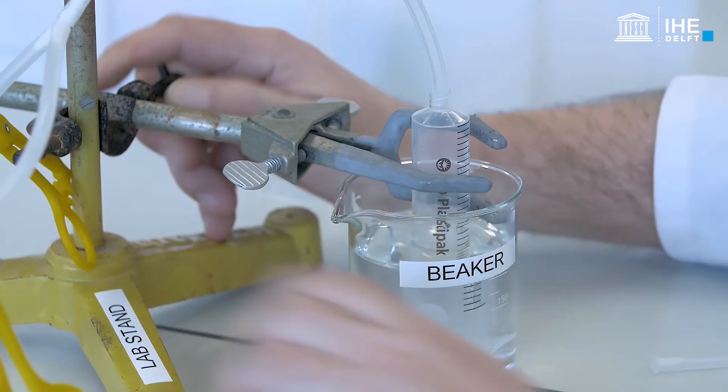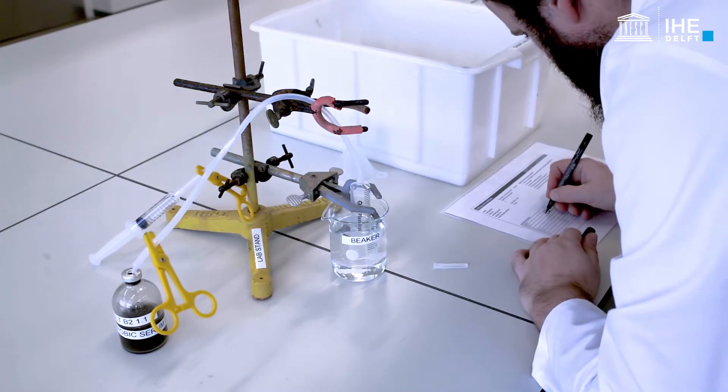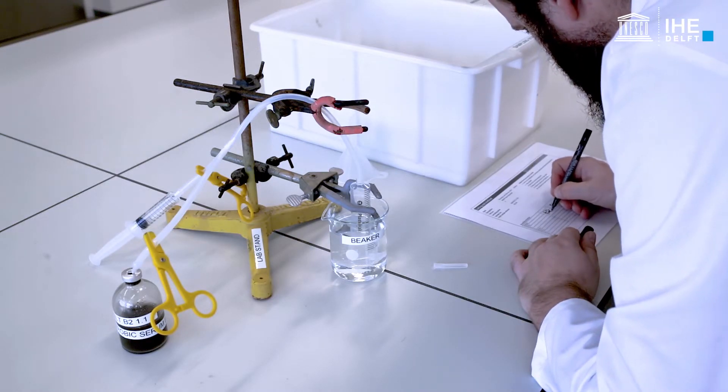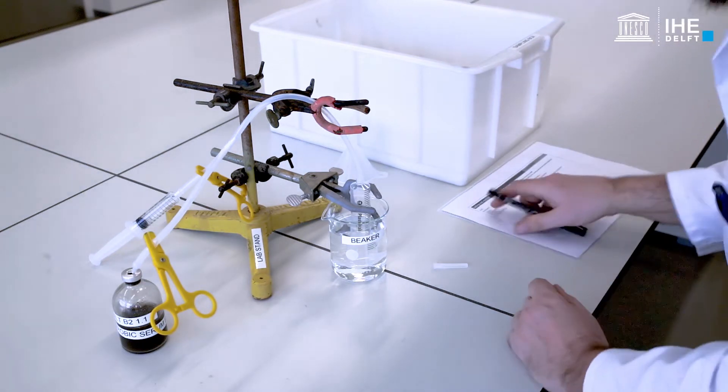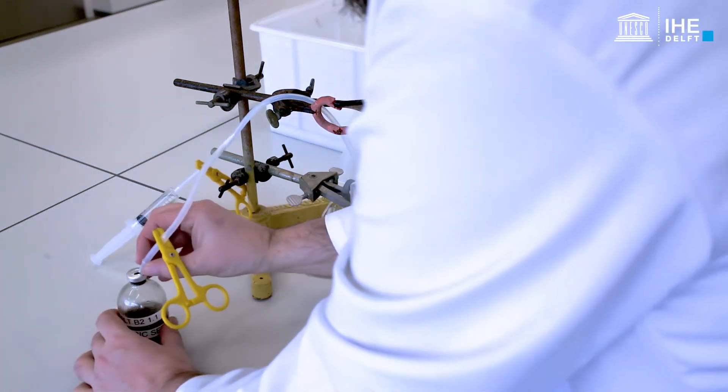Now, the water level in the syringe can be brought back to the water level in the beaker to cancel out the pressure of the water column and the new headspace volume in the syringe, volume one, can be registered.